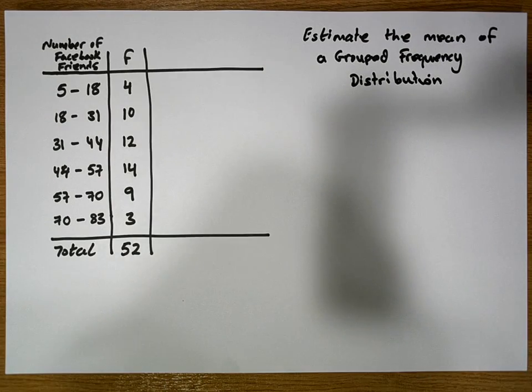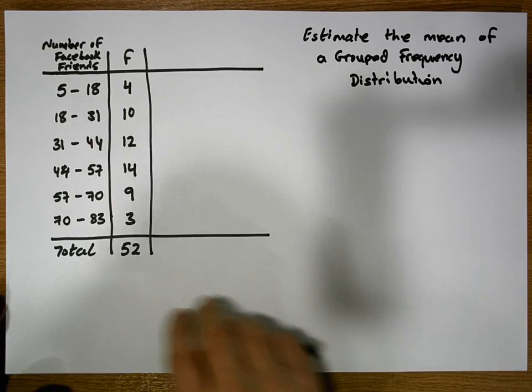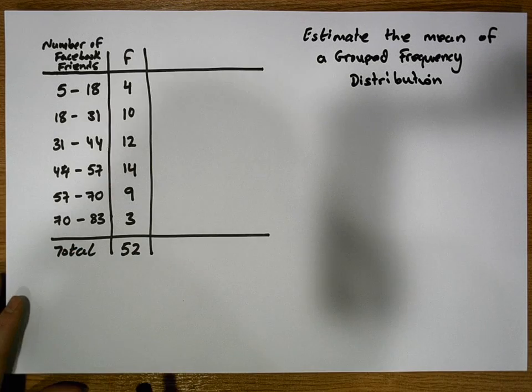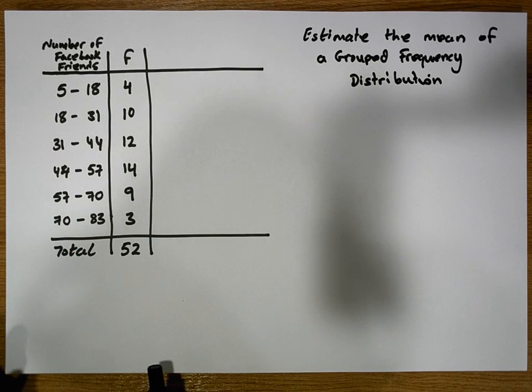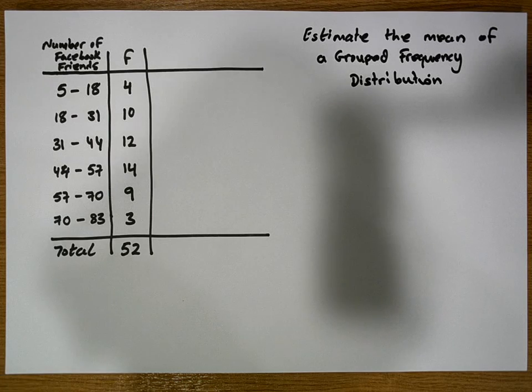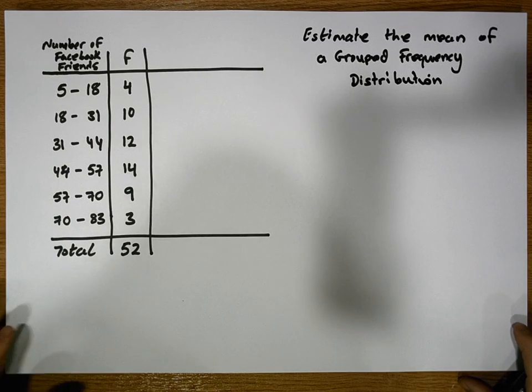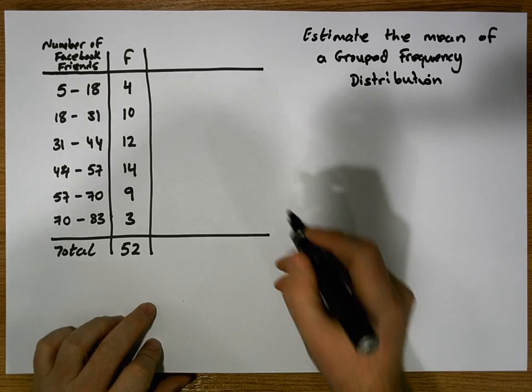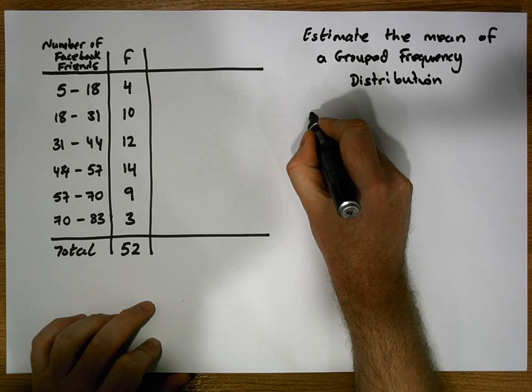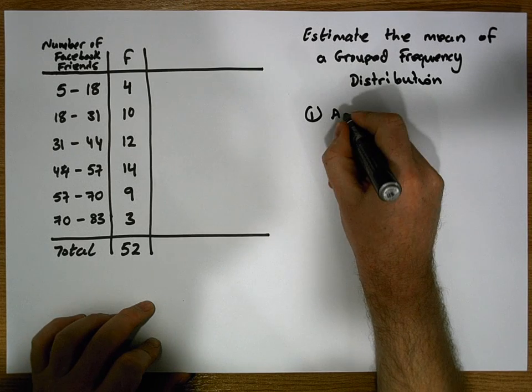What we'd like to do now is find the average or the mean of this particular grouped frequency distribution. Let's keep in mind that we have a formula to estimate the average of a grouped frequency distribution. We're going to assume the data is sample data.